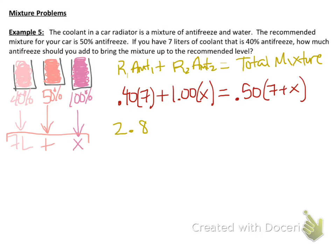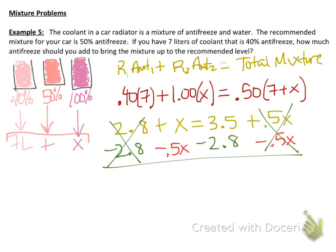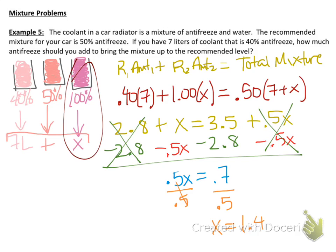And now we just have to solve this equation. 2.8 plus x. Distributing, we get 3.5 plus 0.5x. Now subtracting the 0.5x from both sides, and subtracting the 2.8 from both sides, we end up with 0.5x equals 0.7. Dividing by 0.5, we get x equals 1.4. So what does this mean? Well, recall that x is the amount of 100% antifreeze, so we need to add 1.4 liters of antifreeze.